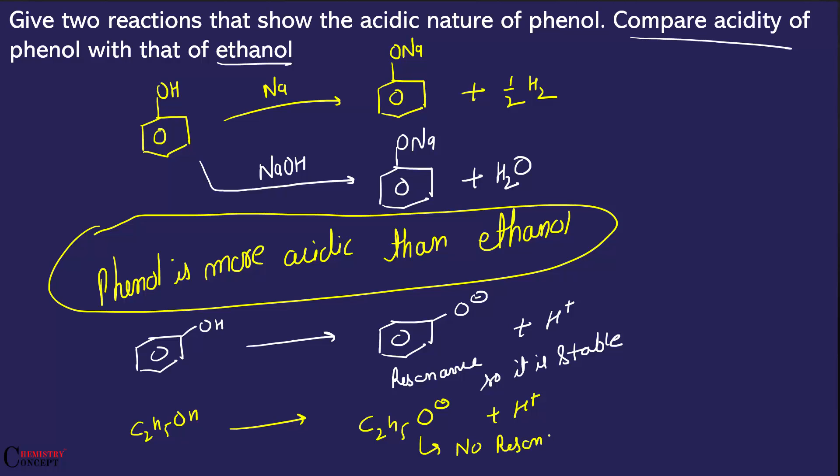And because ethanol's corresponding ion is not stable, ethanol is less acidic. If it is not stable, then it will be less acidic.